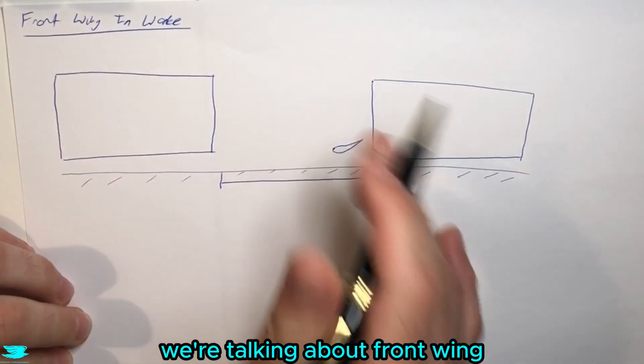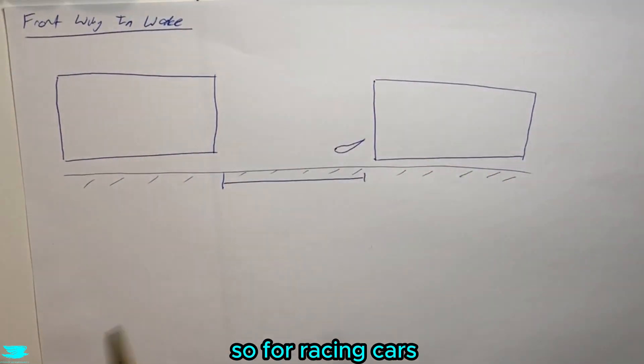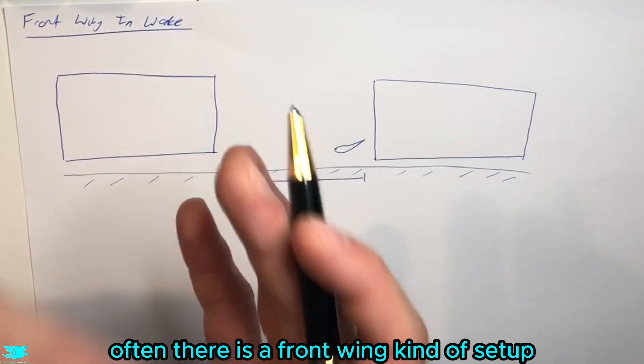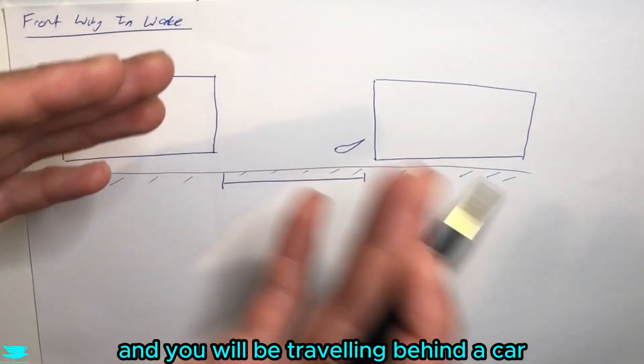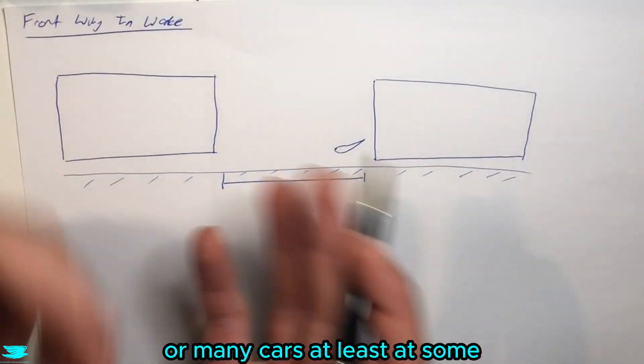What is up amigos, today we're talking about front wing aerodynamics in a wake. For racing cars, there's often a front wing kind of setup and you will be traveling behind a car or many cars at least at some points during a race.